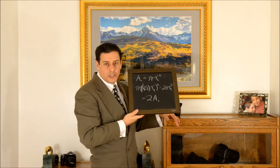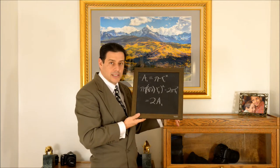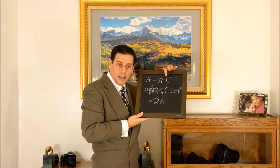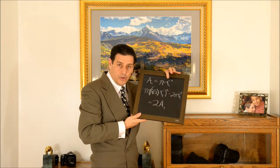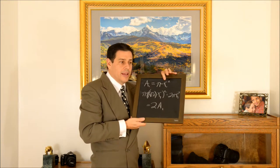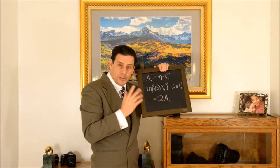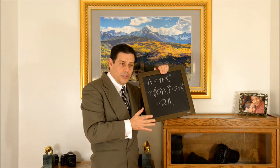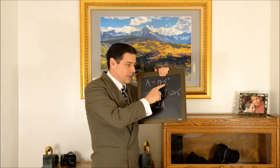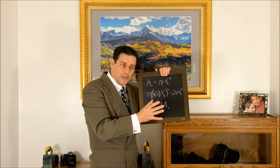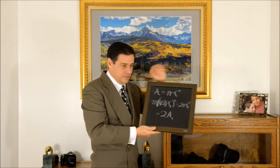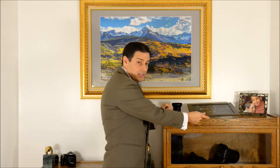That shouldn't be too much of a surprise, since the area is proportional to the square of the radius — I only have to increase the radius by the square root of 2 in order to double the area. Now, the aperture number is the diameter, not the radius, but it's the same thing: if you multiply the radius by the square root of 2, or multiply the diameter by the square root of 2, that's the same relationship.